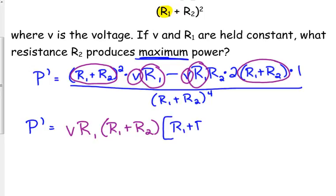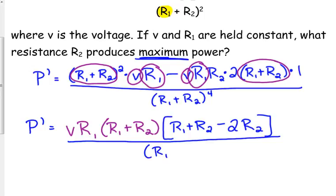So V R sub 1 and then R sub 1 plus R sub 2 is our GCF. So what are we left with? We've got an R sub 1 plus R sub 2 because that was squared in that first term, so we still have one of those left. I'm going to drop the parentheses because I'm going to end up probably combining like terms. And then the only thing we have left from the second one is minus 2 R sub 2.